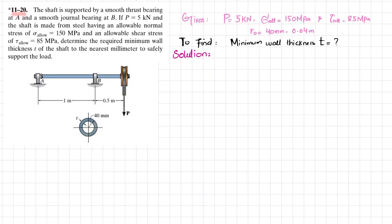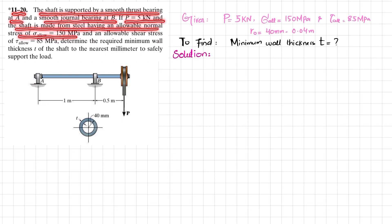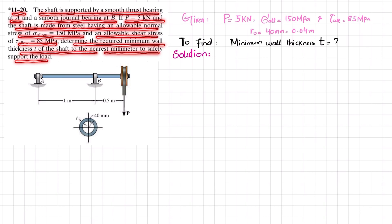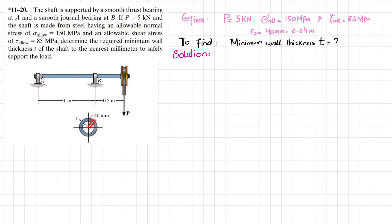Welcome back. Problem 11-20: a shaft is supported by a smooth thrust bearing at A and a smooth general bearing at B. If P equals 5 kilonewtons and the shaft is made from steel with allowable normal stress of 150 megapascals and allowable shear stress of 85 megapascals, determine the required minimum wall thickness of the shaft to the nearest millimeter. The cross-section has an outer radius of 40 millimeters; you must find the inner radius and wall thickness.